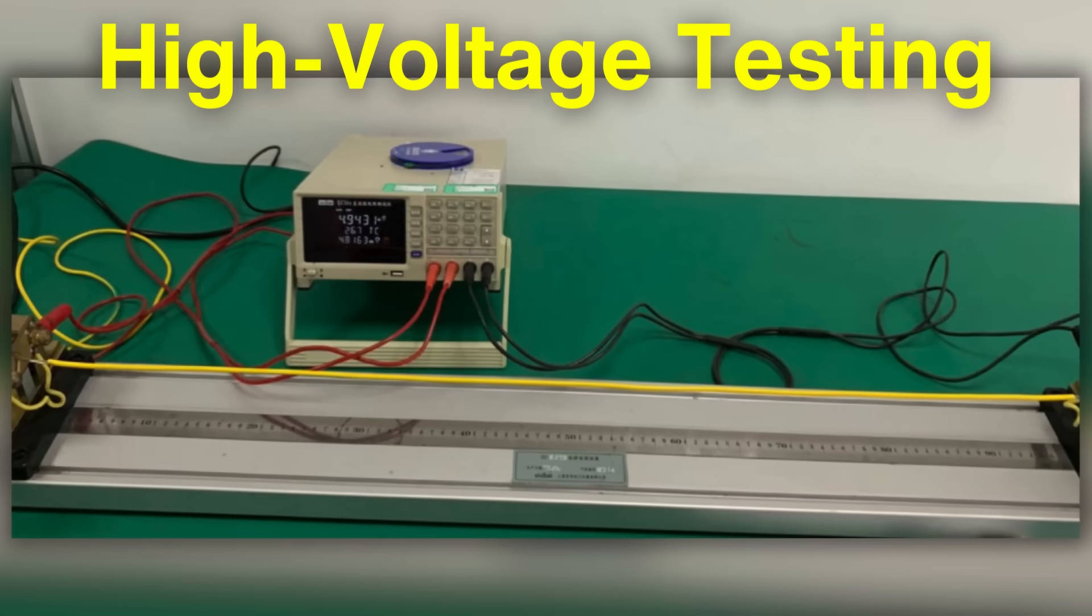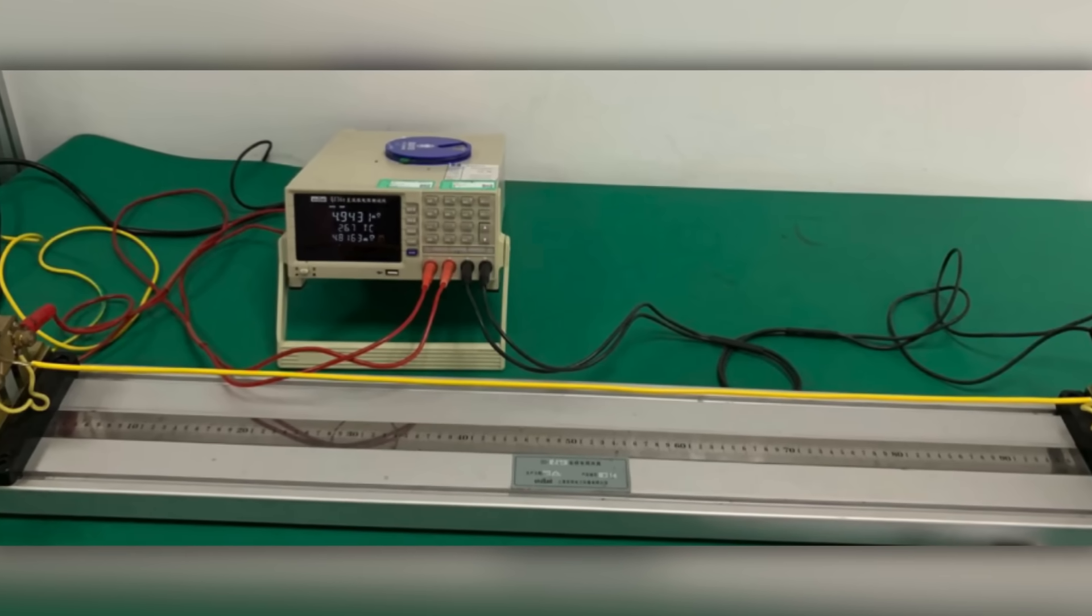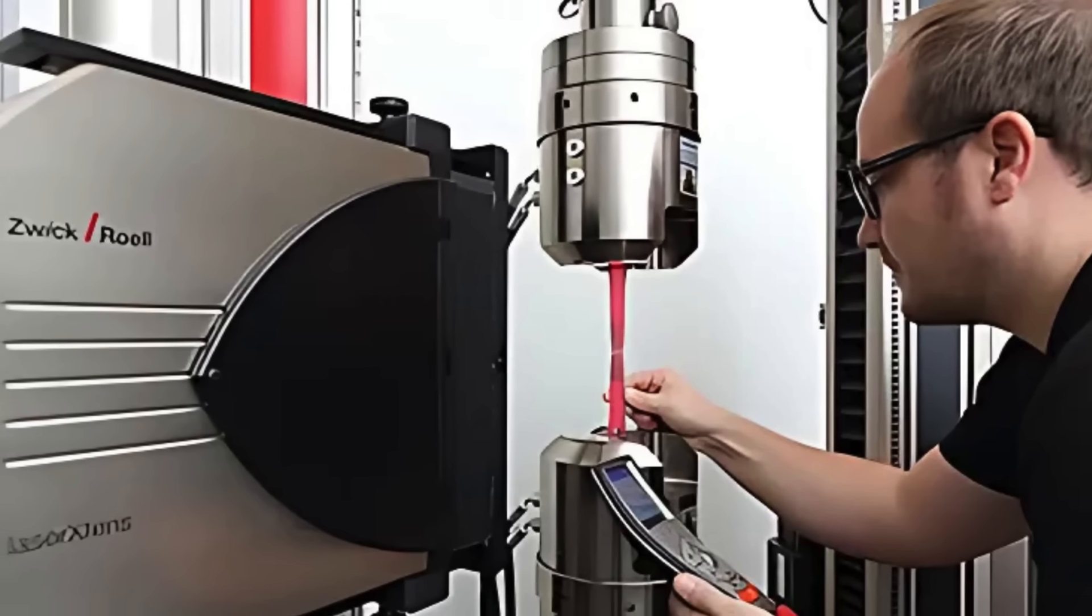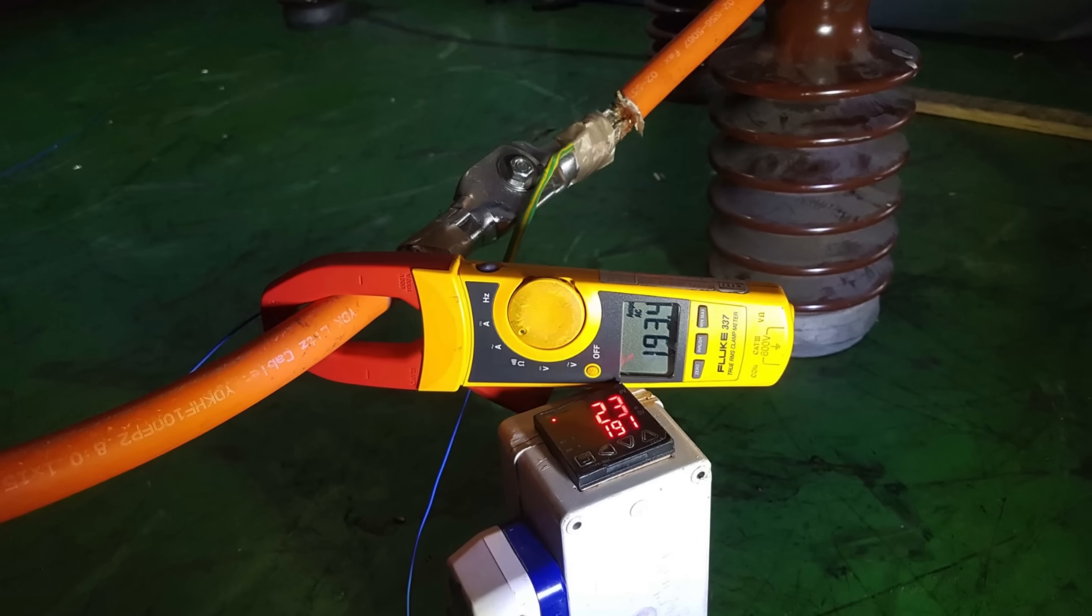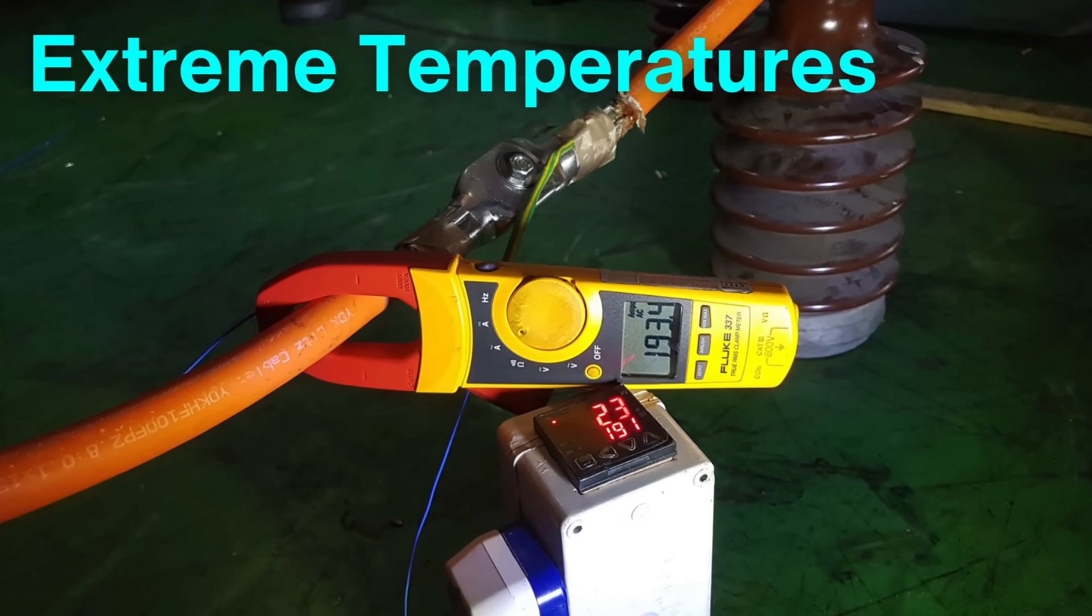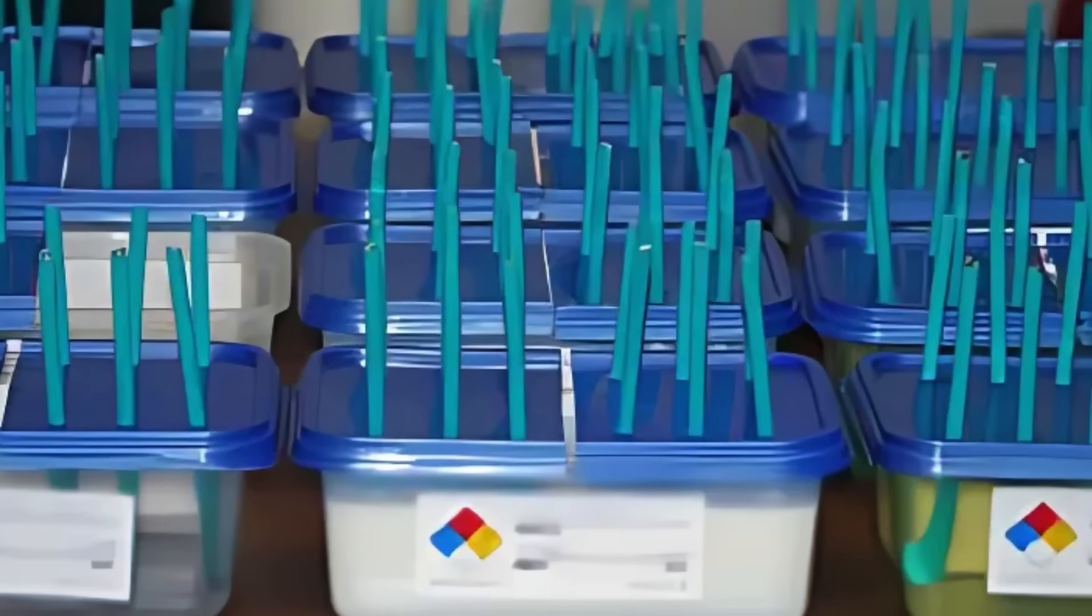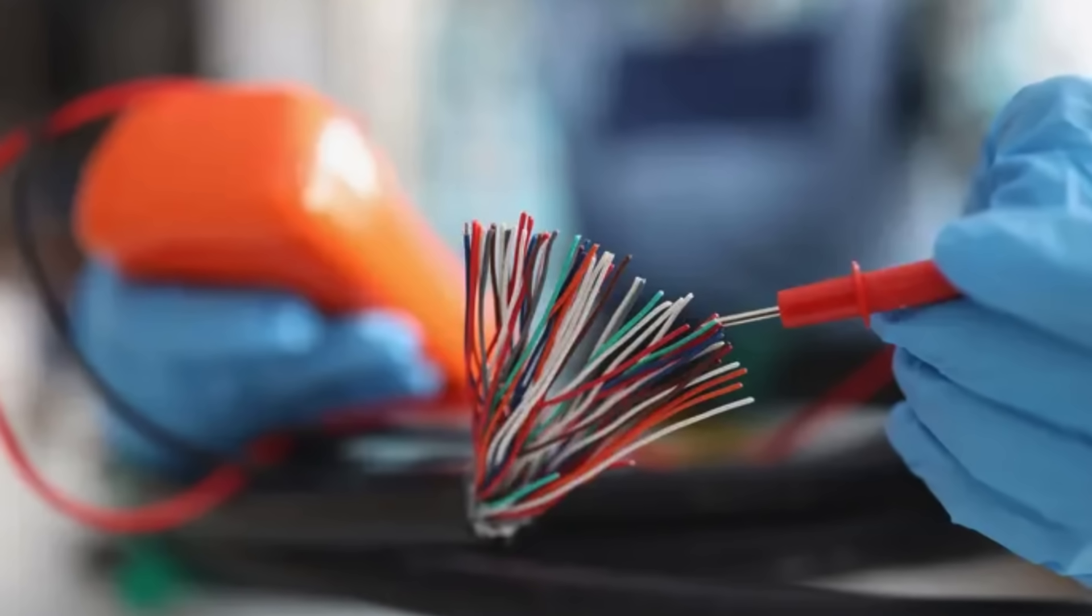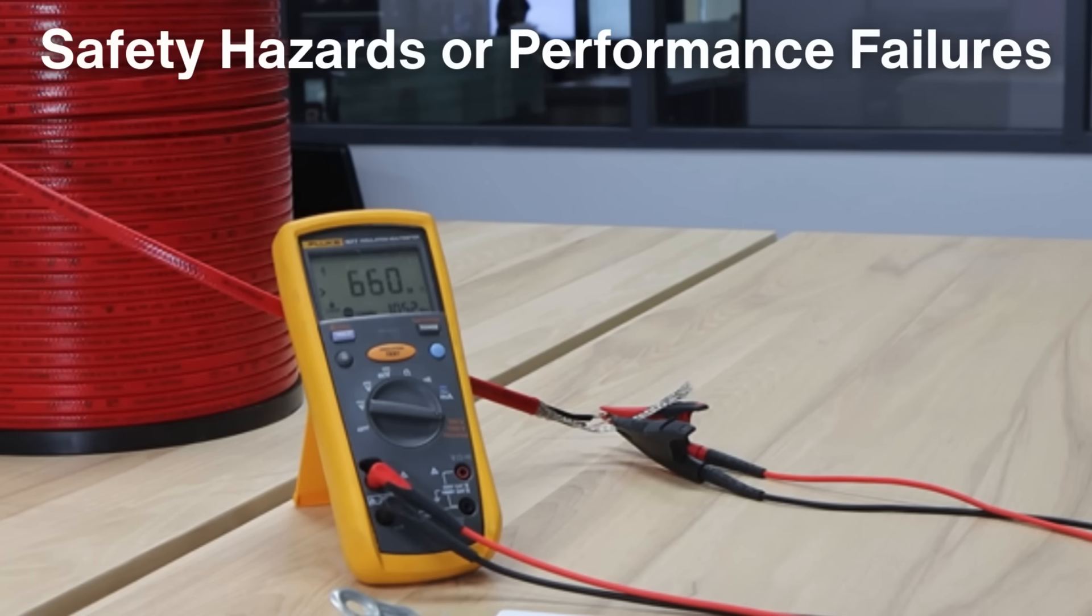High-voltage testing ensures that the insulation can withstand the electrical loads it's designed for, while tensile tests check the wire's ability to endure stretching and pulling. Some wires are also tested for resistance to extreme temperatures or exposure to chemicals, depending on their intended application. This stage is critical because even a minor defect in the insulation or conductor could lead to safety hazards or performance failures.